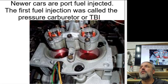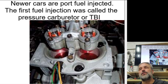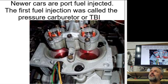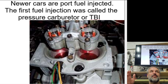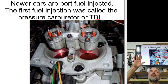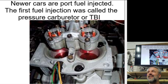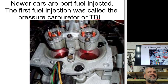New cars are port fuel injected. The first fuel injection system was called the pressure carburetor, or TBI — throttle body fuel injection. Fuel injection was first invented for airplanes, because carburetors have a float and don't work well when tilted. With an airplane and a carburetor, if you start climbing, it could run out of fuel; if you start going down to land or turn, it could cut out and you'd lose power. So carburetors in airplanes don't really work out — they use fuel injection instead.